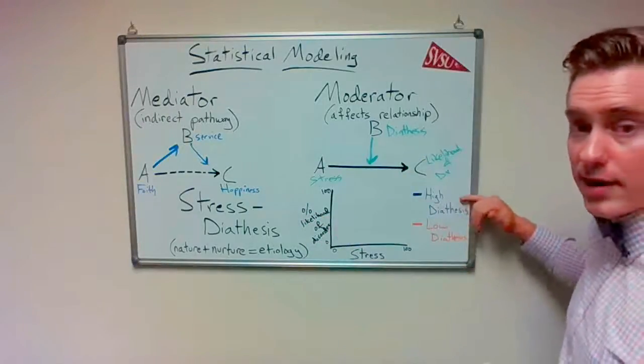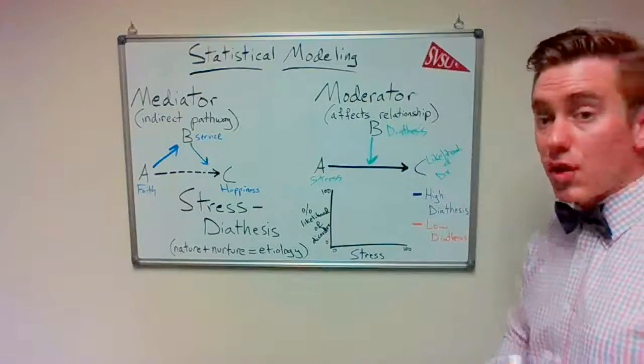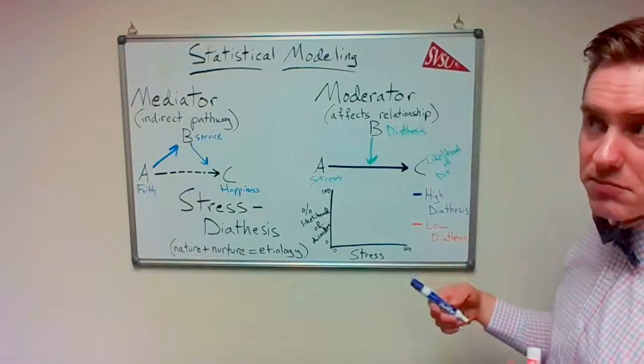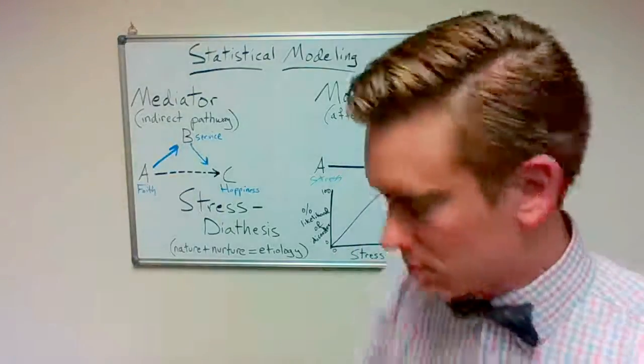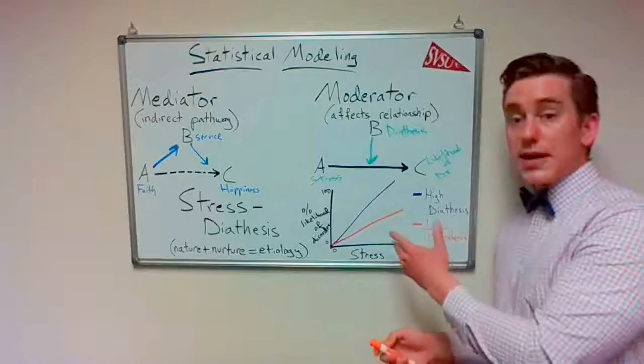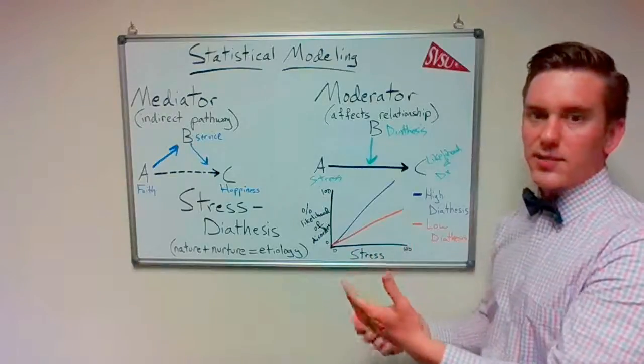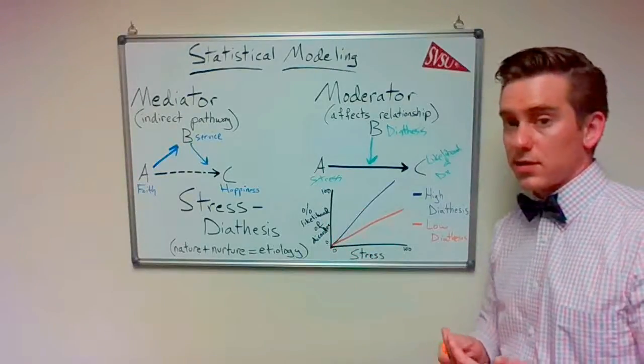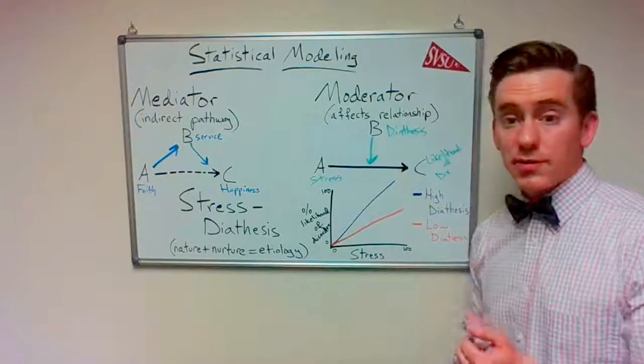This correlation between stress and likelihood of a disorder is moderated by one's diathesis. It looks something like this, where folks with a higher diathesis, in other words, maybe schizophrenia runs in their family, are going to have a stronger correlation between stress and schizophrenic outcomes than folks with a lower diathesis, for whom schizophrenia doesn't run in their family. The chart might look something like this. The idea being, as you move across this chart, we're moving from 0 to 100% stress, and these are just sort of abstract hypotheticals, but somebody with 0 stress is probably not going to have a psychotic break and become schizophrenic. Probably not. But somebody with a 100% stress level, if you push anyone hard enough, they're going to break somehow.